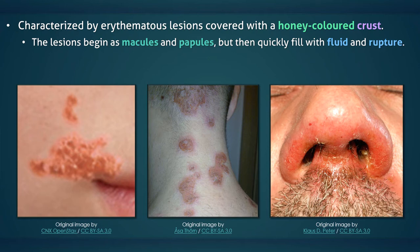A distinction is made between three types of impetigo. In non-bullous impetigo, there are small vesicles that quickly burst and are often not present upon evaluation. In bullous impetigo, there are large flaccid bullae. In both of these subtypes, the fluid-filled lesions rupture and result in a superficial erosion.